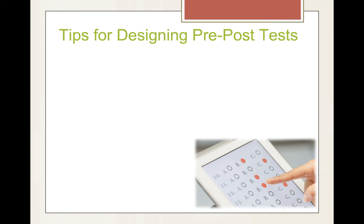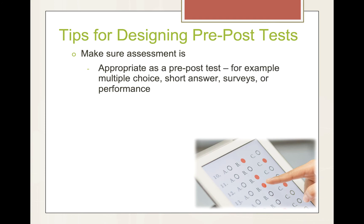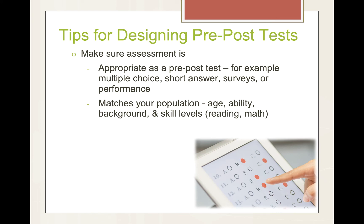Here are some tips for designing pre- and post-tests. Make sure your assessment is appropriate as a pre- and post-test. For example, multiple choice, short answer, surveys, or performance might be the most efficient. Make sure that it matches your population, such as age, ability, background, and skill level in things like reading and math. You want to make sure it's not too easy or too difficult. Make sure that it measures what you intend to measure — this can be a real stumbling block. If you're looking at the affective domain, you don't want to test what they've learned; you want to test how their choices have changed.